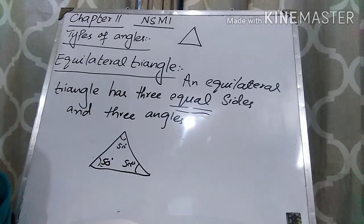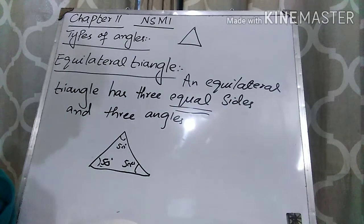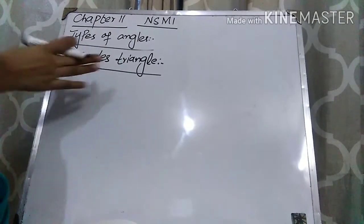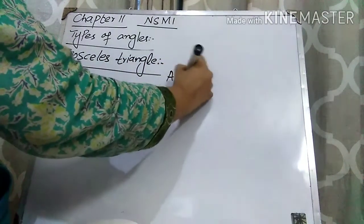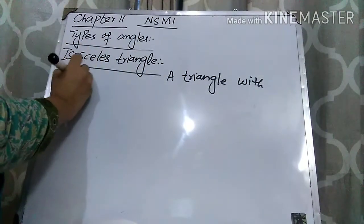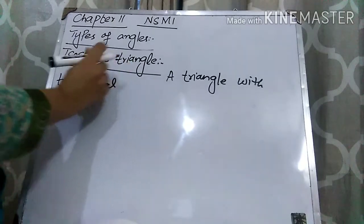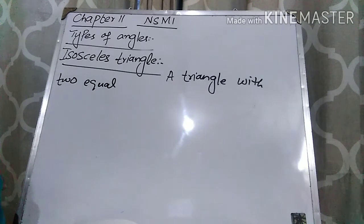Now let's come to the isosceles triangle. I hope the definition of equilateral triangle is clear to you. An isosceles triangle is a triangle which has at least two equal sides. A triangle with two equal sides and two equal angles — remember that if it is having two equal sides, it means its two angles are also equal. If the sides are equal, then the angles are also equal.